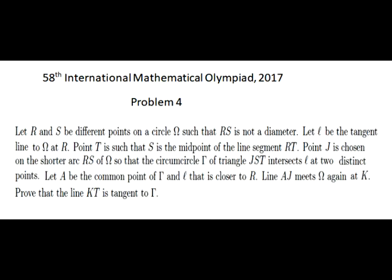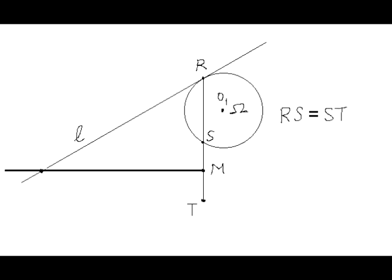This is problem number 4 of the International Math Olympiad in 2017. Please read the description of this problem, and then we will construct the drawing as we usually do for geometric problems. First, draw circle omega and a chord RS that is not a diameter. Then prolong this chord to point T to double its length, as required by this problem.